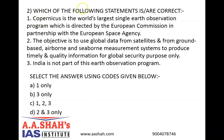Question 2. Which of the following statements is or are correct? 1: Copernicus is the world's largest single earth observation program which is directed by the European Commission in partnership with the European Space Agency. 2: The objective is to use global data from satellites and from ground-based, airborne and seaborne measurement systems to produce timely and quality information for global security purpose only. 3: India is not part of this earth observation program. Select the answer using the codes given below. A: 1 only, B: 3 only, C: 1, 2 and 3, D: 2 and 3 only.